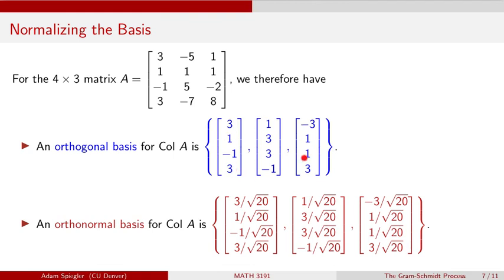All three of these orthogonal basis vectors happen to have the same length — though that's not generally the case, so be careful. The length of V1 is the square root of 20. To find the unit vector in the same direction, we divide each entry by the magnitude, and we do that for all three vectors. The result is three vectors that are all orthogonal to each other and all have length 1 — unit vectors — giving us an orthonormal basis for the column space of A. These are especially nice because they make calculating projections even easier.